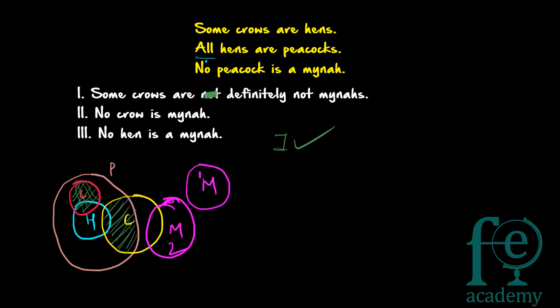The second conclusion is: no crow is mina. No crow is mina is true in the case of the red circle — there is no overlapping. But in the yellow circle some crows can be minas, and we cannot definitely say which representation applies. The crows can be represented by either the red or yellow circle. If represented by the yellow circle, some crows are minas, so conclusion 2 does not follow for the yellow circle. The conclusion must be satisfied by all possible representations, so we can surely say conclusion 2 is false.